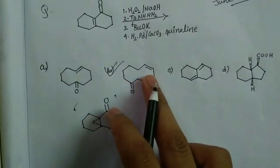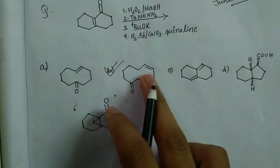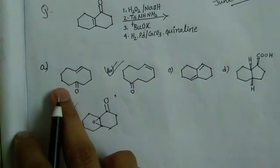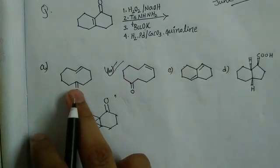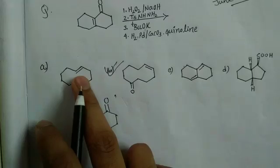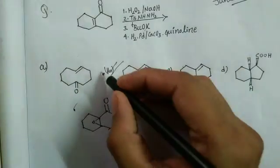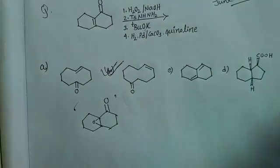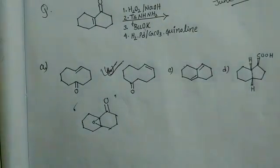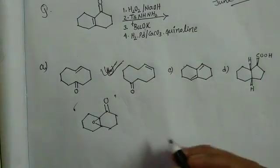Among all the given options, only option B has a cis alkene. In option A, although it is a result of the Eschenmoser fragmentation, the alkene is trans. Therefore, option B is the correct answer.